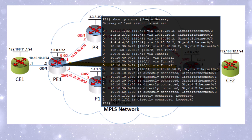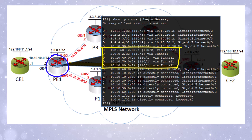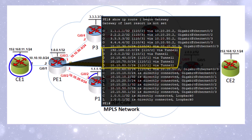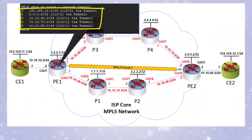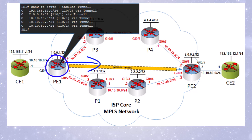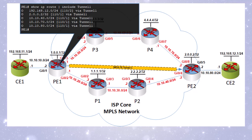Just a reminder: the auto route announce feature tells PE1 about routes reachable via PE2, but PE1 itself does not re-advertise these routes to other OSPF neighbors like CE1, P1, or P3. These routes appear in the head end router only — they are there only for traffic moving from PE1 to PE2 over the tunnel. The LSP tunnel is unidirectional, so any return traffic will simply use the OSPF TE underlay to get back.